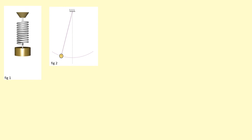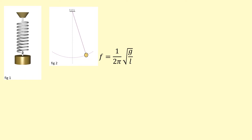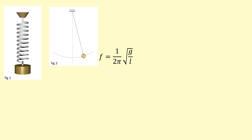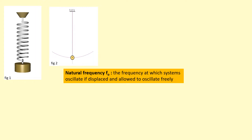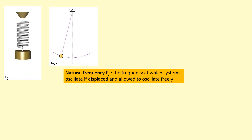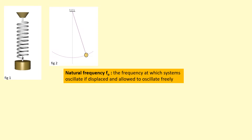If I pull this mass on a pendulum and I release it, it will oscillate at its natural frequency, and that natural frequency can be determined using this equation with the gravitational field strength and the length. So natural frequency is the frequency at which systems oscillate if displaced and allowed to oscillate freely — by freely I mean without any resistive forces or any applied external forces being applied to the system.